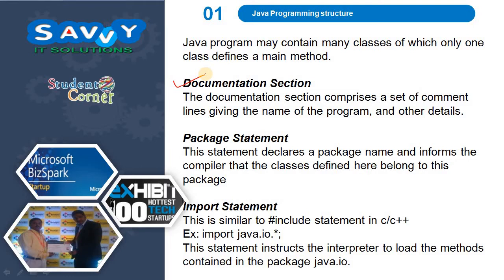The documentation section is also called a comment. Comments are nothing but non-executable statements. At the end of this presentation we will learn how to define comments. The second one is the package section. This statement declares a package name and informs the compiler that the class defined here belongs to this package.